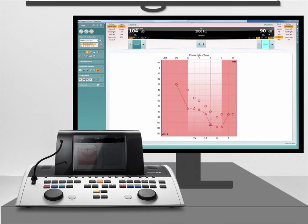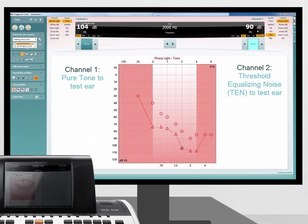The test consists of measuring pure tone thresholds in a special masking noise called TEN, which stands for threshold equalizing noise.